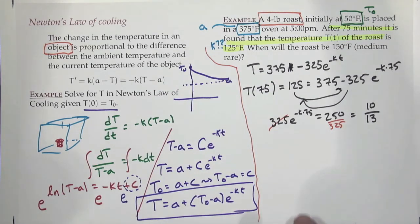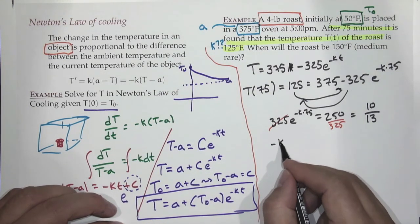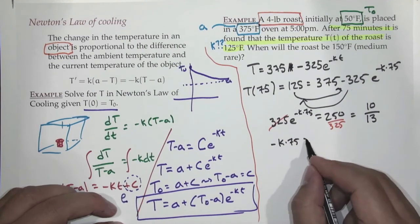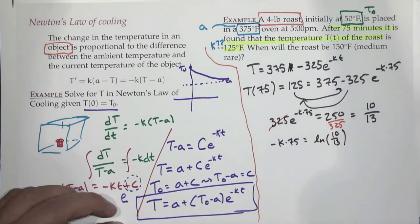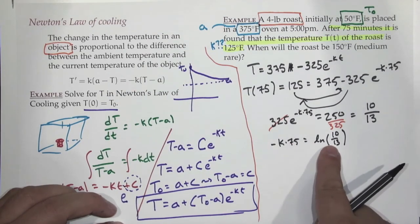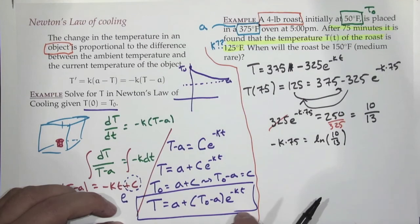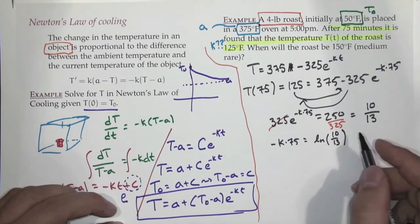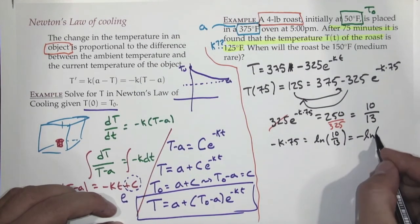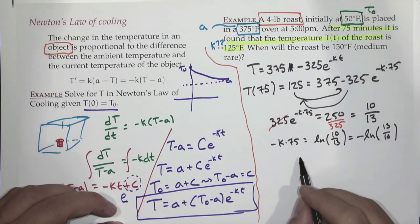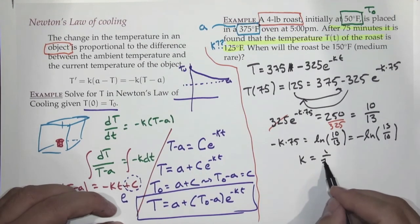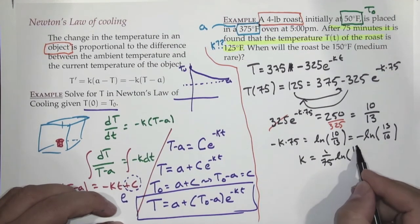Taking the natural log: −75K = ln(10/13). We can rewrite this as −ln(13/10), so negatives cancel and K = (1/75)·ln(13/10). Physicists would just punch this into a calculator.